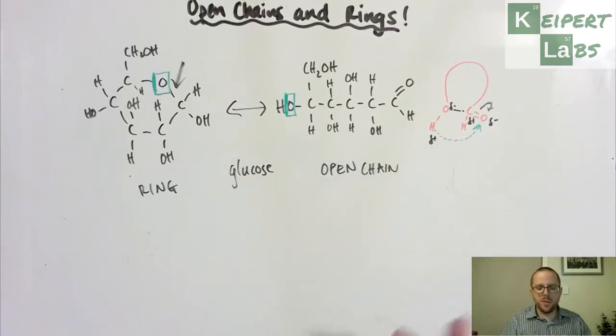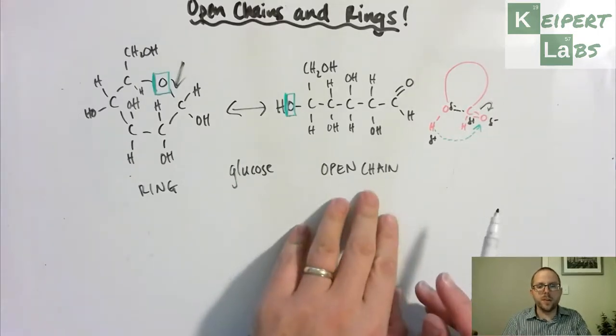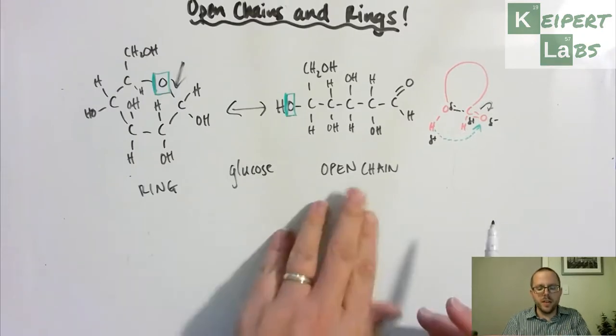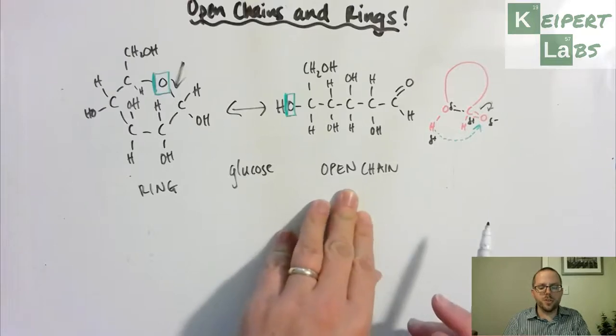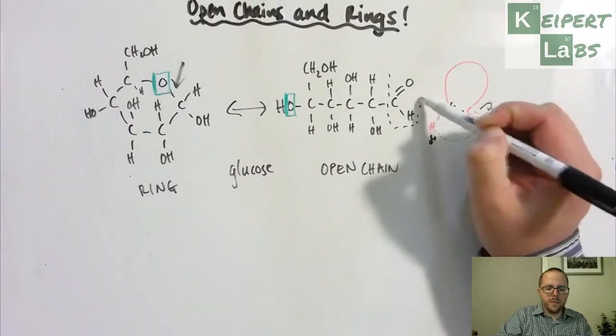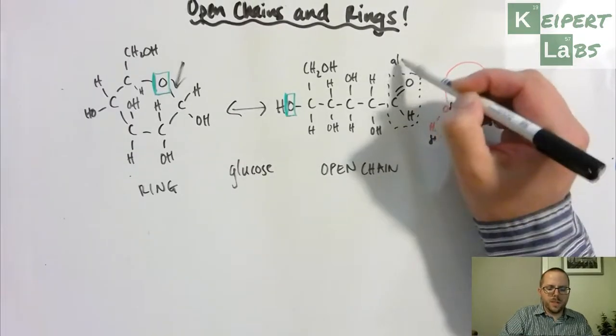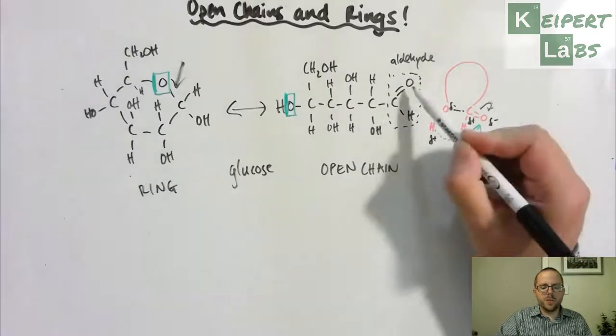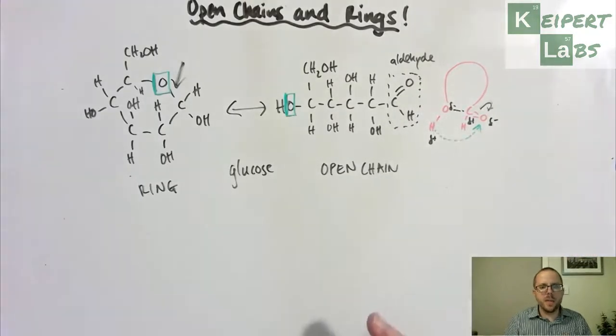Now, the reason that we care about this is not only because chemistry is awesome, but also because this open chain version is responsible for lots of the behaviour we're going to see a little bit further down the line, in terms of what we call reducing and non-reducing sugars. Due to the presence of this group up the end here, this is called an aldehyde group, and then it's due to what this group can do in its reaction that we get some different things happening.